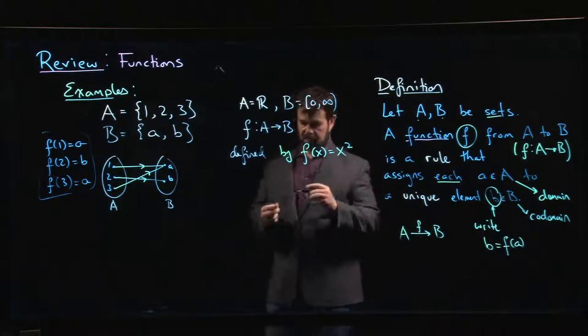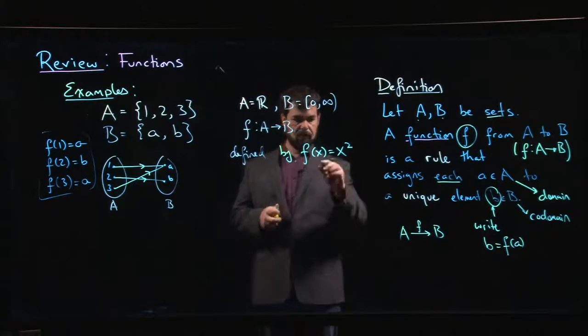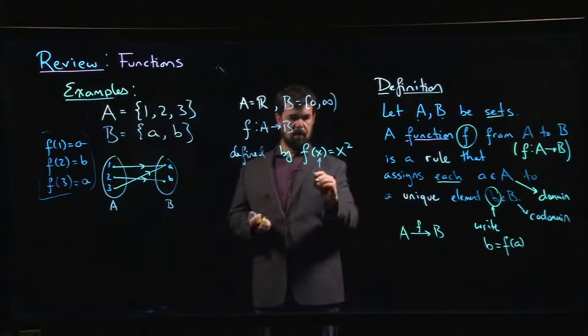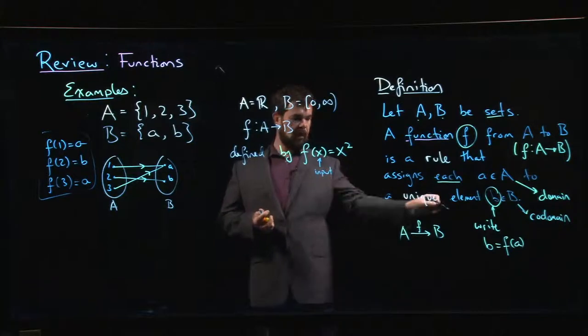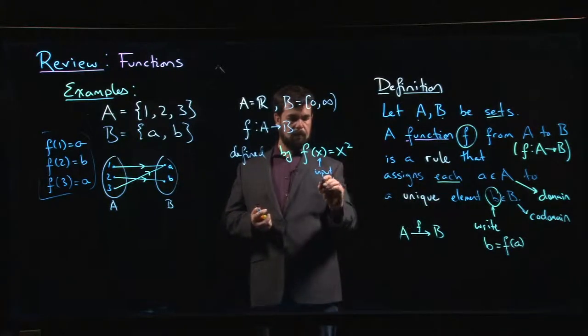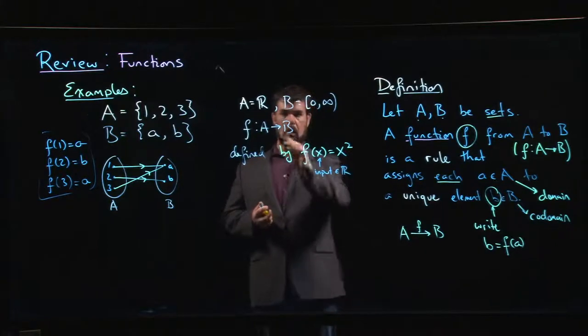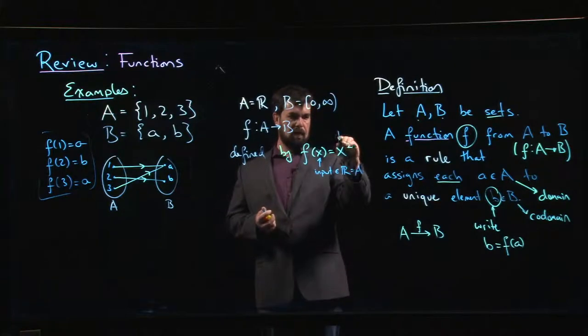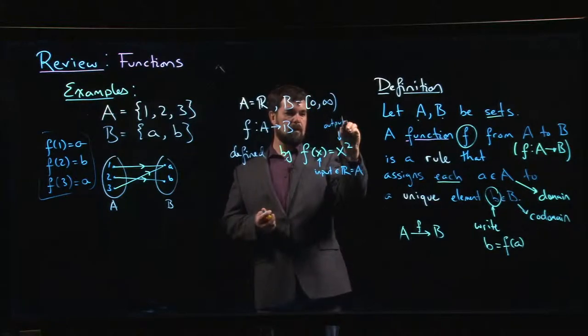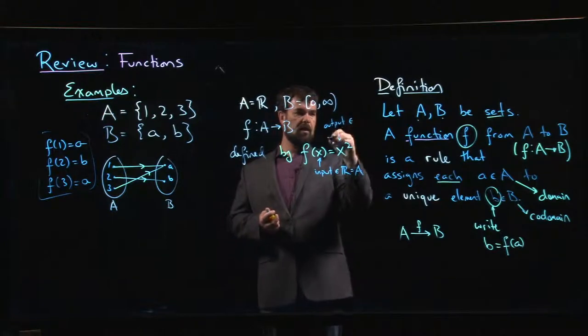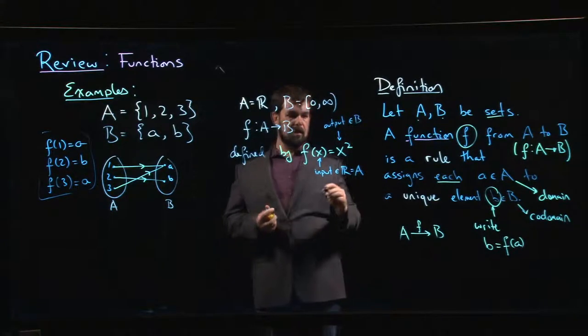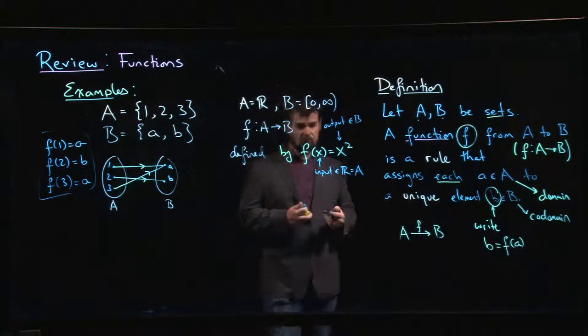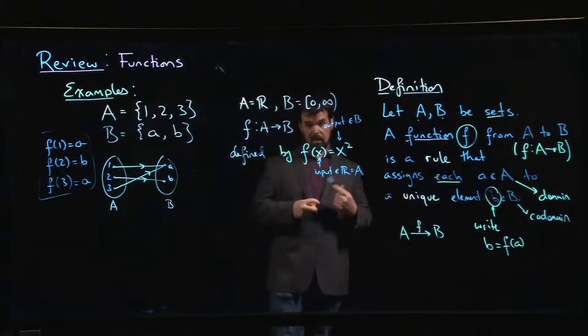This x is my input, it's what I called A over there - it's an element of R, of A. This x² is my output, so that's an element of B. We know that if you square a real number, the result is never negative, so this is indeed an element of that set B.